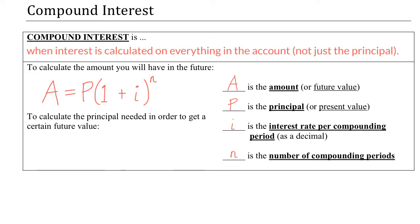If you know that five years from now you want to have $5,000 and you need to figure out how much to put into your account today, then you would use this formula to calculate P, or the present value — the value it's worth right now. I want you to notice that both formulas have an exponent.